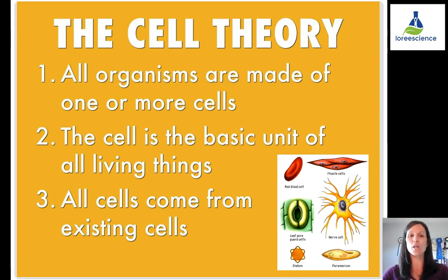The first component is that all organisms are made up of one or more cells. That means some organisms may only be one cell, whereas you can get organisms that contain thousands, millions, or billions of cells.